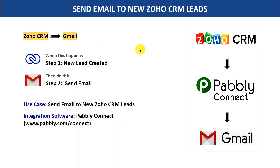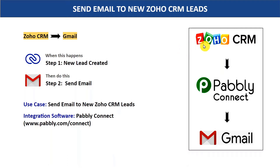Hey everyone, in this video we are going to learn how you can automatically send an email to your newly created Zoho CRM leads via Gmail. Here for creating leads I'm going to use Zoho CRM — you can use any other CRM platforms like HubSpot, Pipedrive, etc. Zoho CRM and Gmail are two very different applications and there is no direct connection between them.